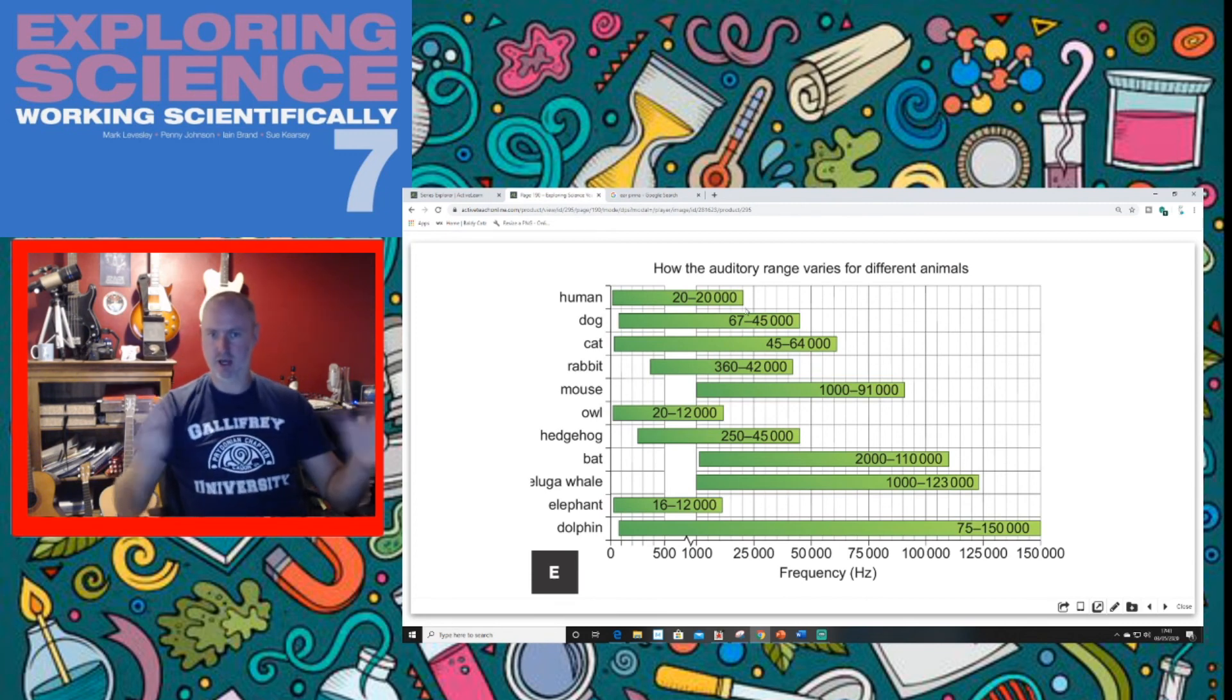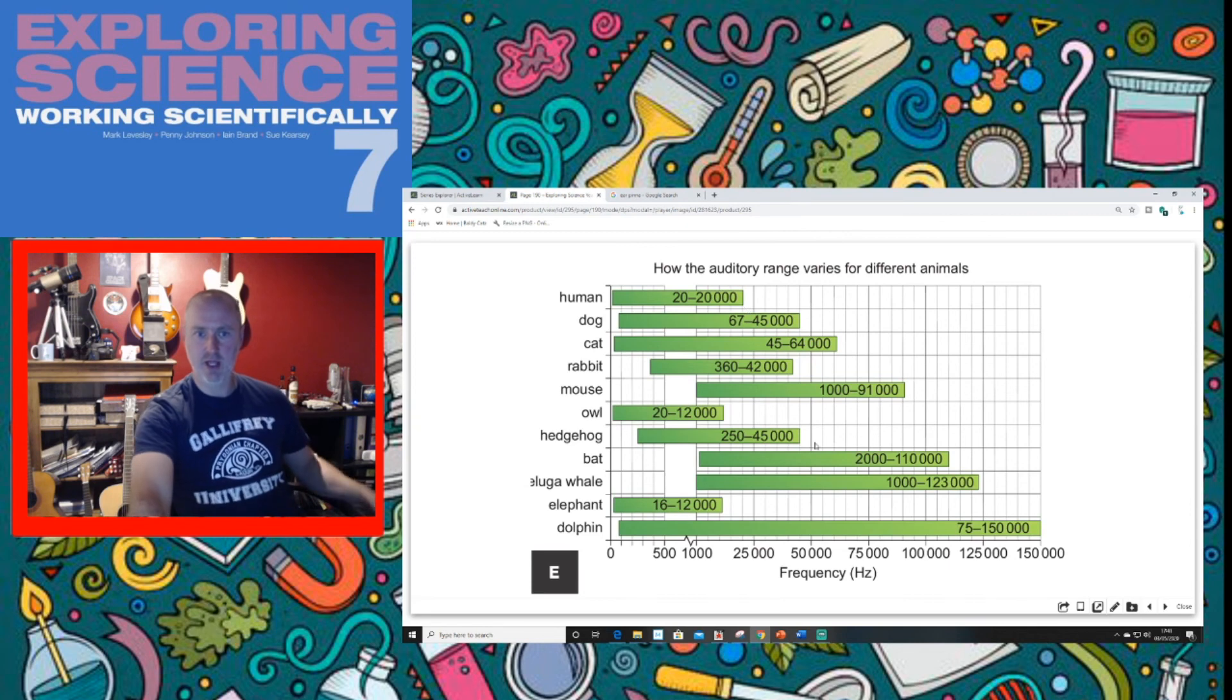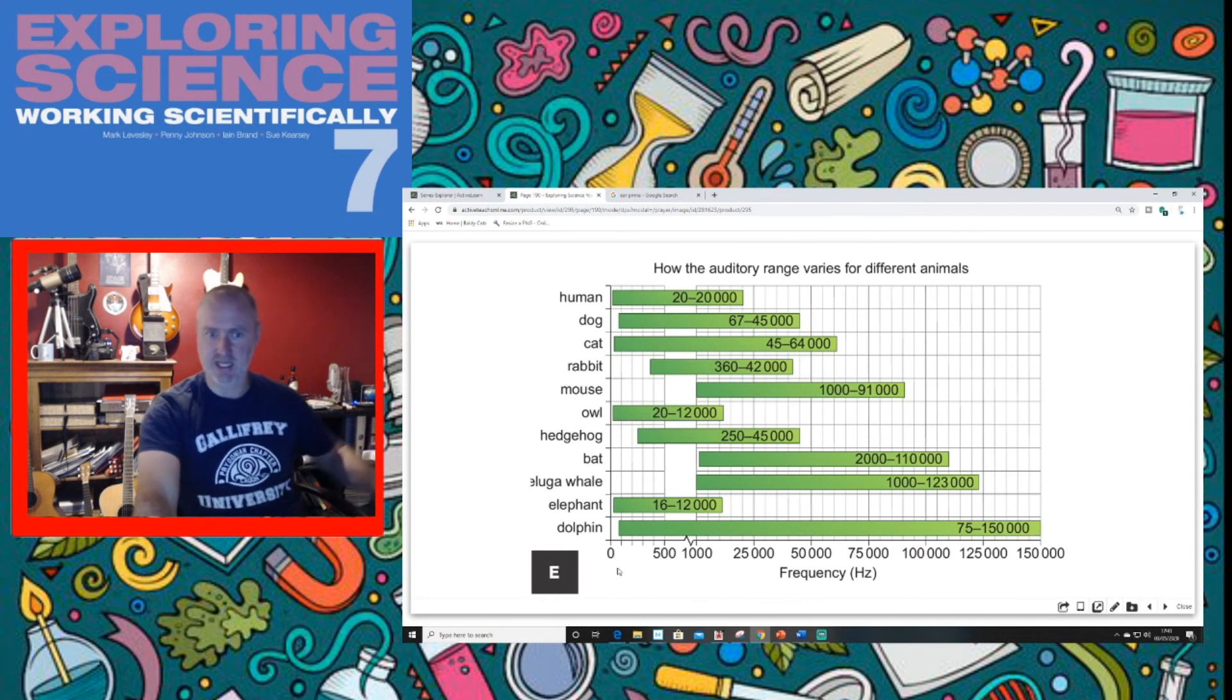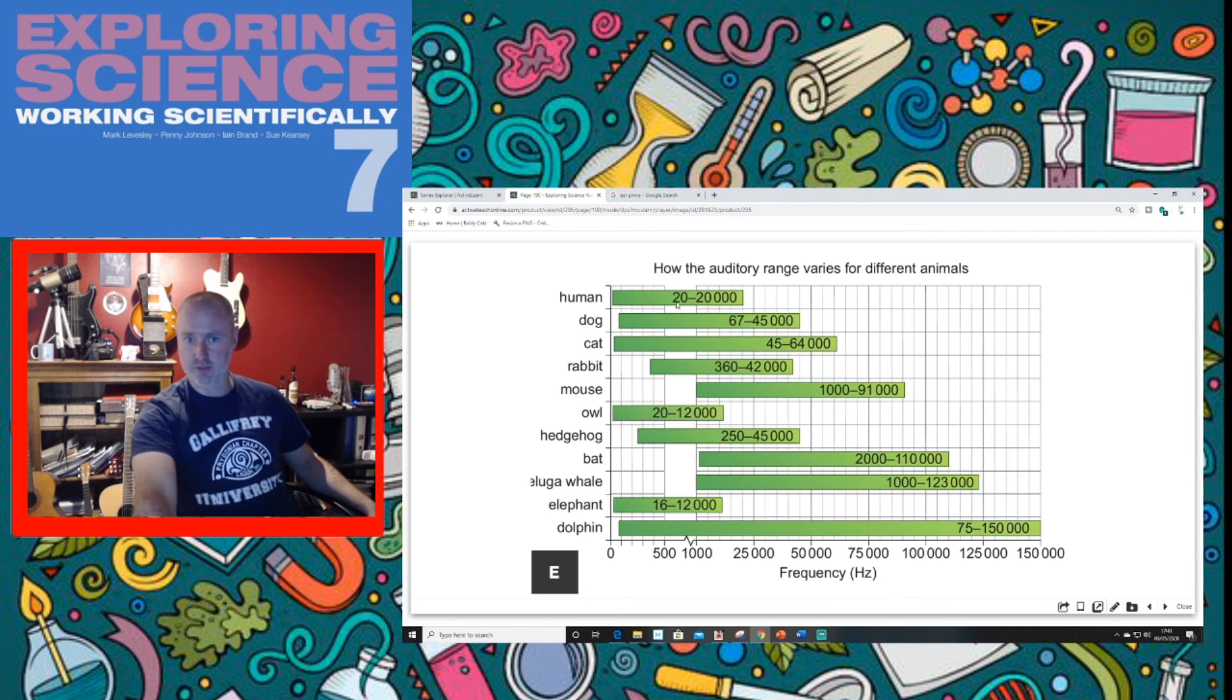So with an owl, we both - owls and humans - we share the same lowest frequency we can hear, but humans can hear higher frequencies. So we talk about the range, but we also are going to compare who can hear the lowest and who can hear the highest as well, because the one with the biggest range won't always be the one that hears the lowest or the highest. If we look at a dolphin, a dolphin has got an enormous hearing range, but it can only hear down to 75, whereas humans can hear down to 20. So we can actually hear a lower sound than a dolphin, even though a dolphin's hearing range is much higher.